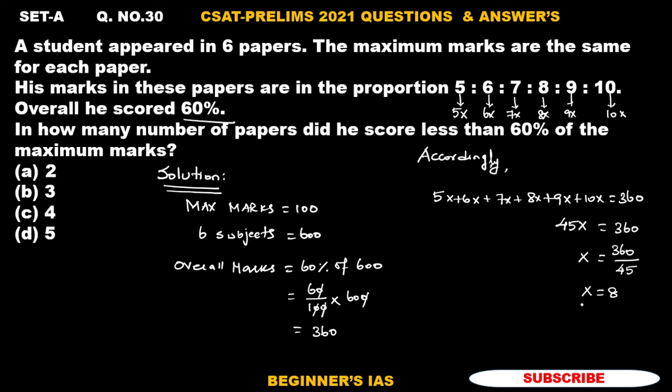We know the value of x now. Let us check the marks in each paper so that we can check how many number of papers did he score less than 60%, which means less than 60 marks. For paper 1, 5x is 5 into 8, so this is 40. In paper 2 he has secured 6x marks, therefore 6 into 8 is 48.